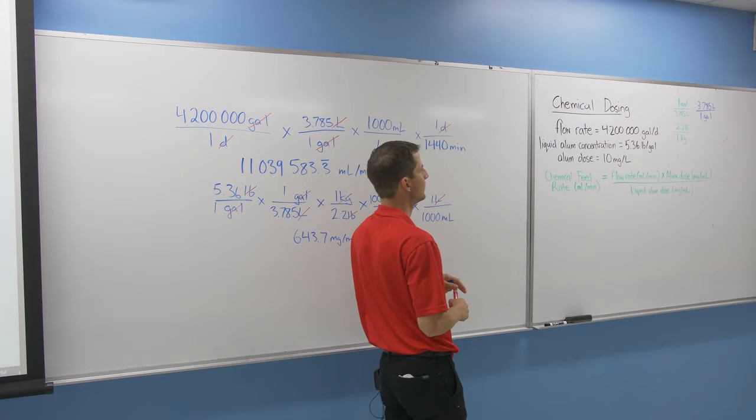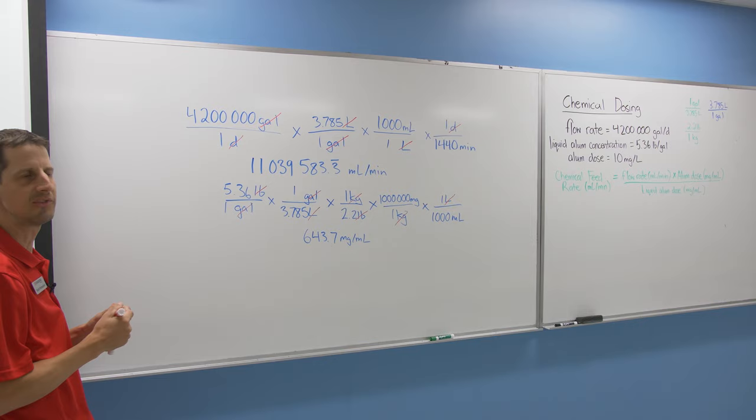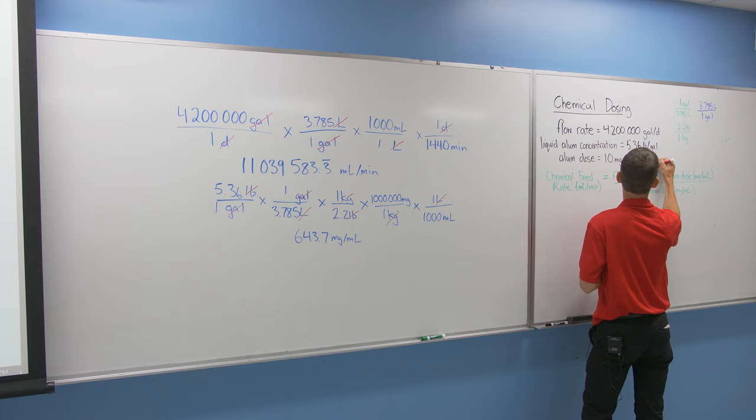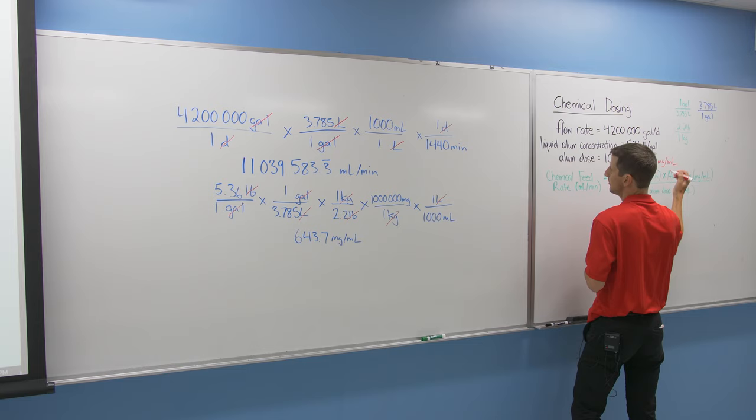Last conversion: milligrams per mil to milligrams per liter. That's just a thousand conversion factor, so we divide by a thousand and get 0.01 milligrams per milliliter for that one.